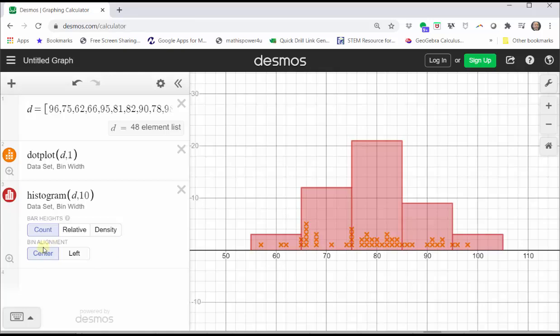For bin alignment, we have the option of center or left. Right now it's set on center. If we click on left, the bin alignment is now on the left. Let's go back to the center bin alignment, and then we'll finish by making our box plot.